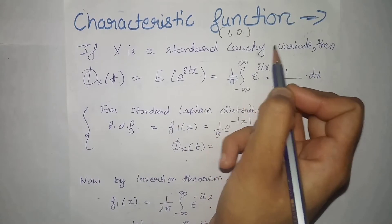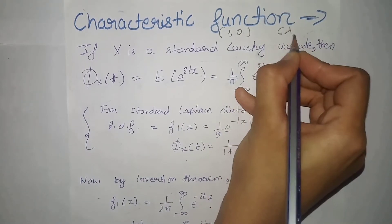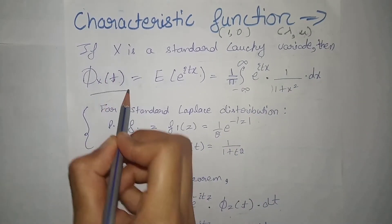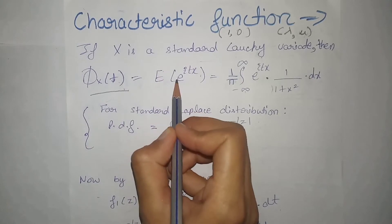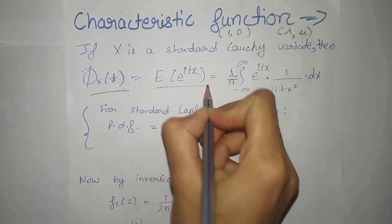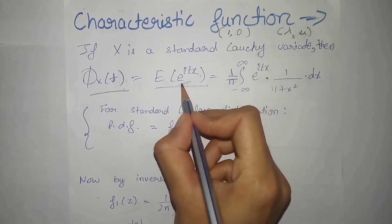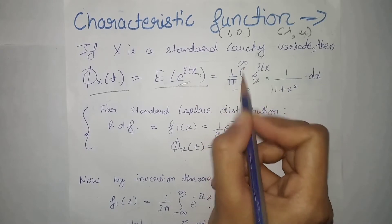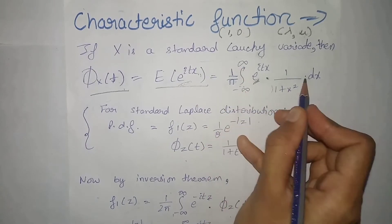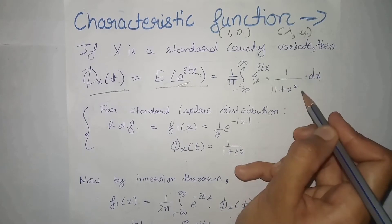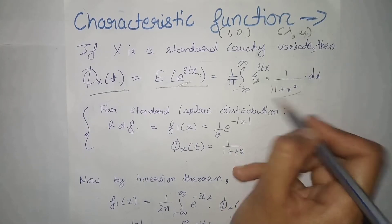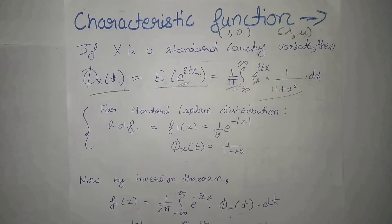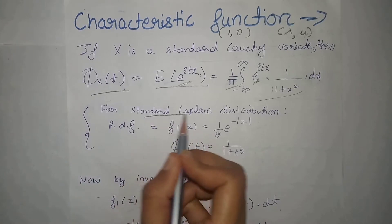First we will take the standard characteristic function, which has parameters 1 and 0, and then we will take the characteristic function with parameters lambda and mu. We know the characteristic function is denoted by this expression and is actually equal to the expectation of e raised to power iota t x, where we apply the expectation definition as an integration over the whole range of x with respect to dx. Our PDF x is a standard Cauchy variate.